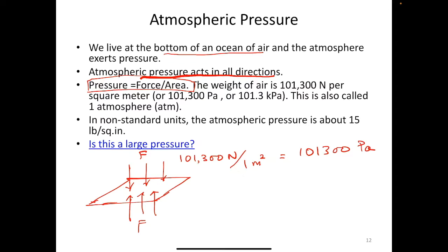There are some alternative units of pressure. Pascal is one unit. Another unit is the atmosphere, and one atmosphere is equal to 101,300 pascals. So it makes sense to measure atmospheric pressure in atmospheres. If the atmospheric pressure happens to be a little higher, it might be 1.01 or 1.1 atmospheres.